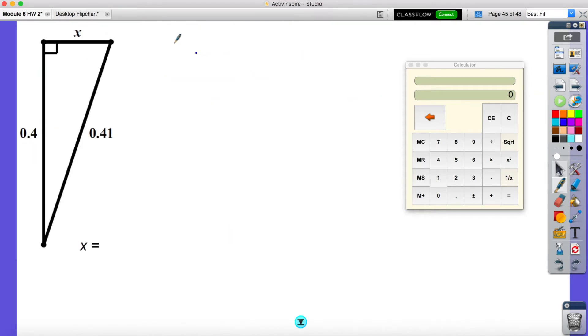Now looking at this one, the triangle is a little flip, but same idea. Across from the 90 degree angle is my C squared, so this is C. And I'll just say this is my A value of 0.4, which means I'm solving for my X, which is my B value. So this would look like 0.4 to the second power plus B squared is equal to 0.41 to the second power.